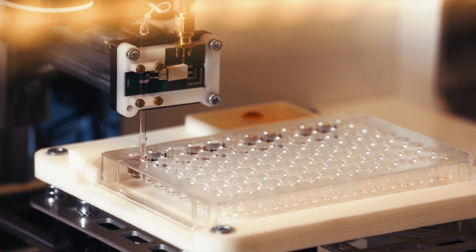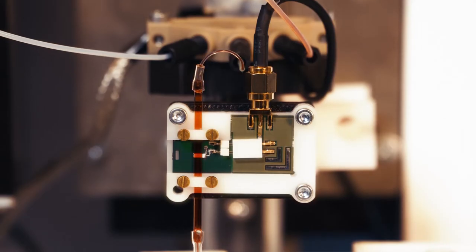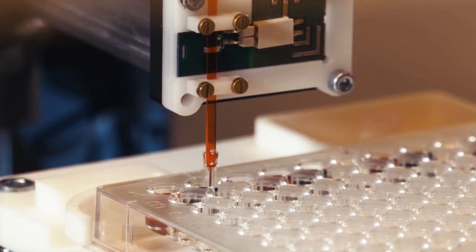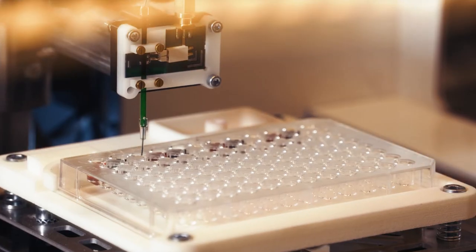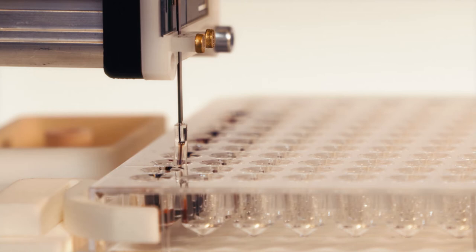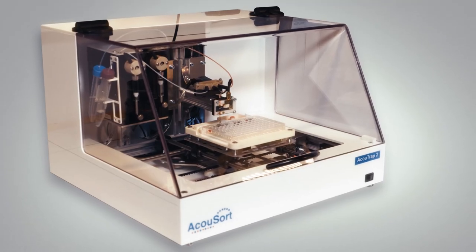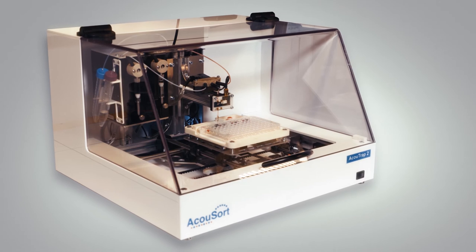In the ACU-TRAP platform, the acoustic trap is mounted as the tip of a pipetting robot, where samples and reagents are pulled up from and released into 96-well plates. This enables automation of various cell and subcellular particle assays.